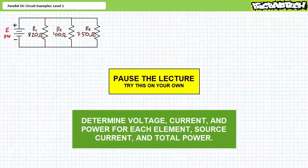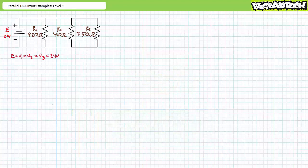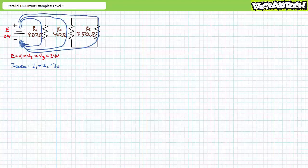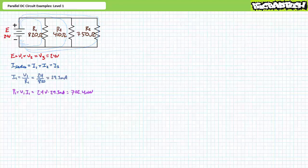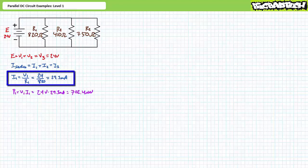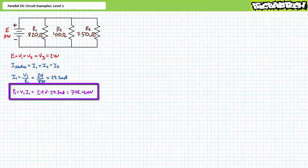If you're tracking, you should have obtained the following results. Voltage across elements in parallel is the same: E equals V1 equals V2 equals V3, all equal 24 volts. KCL gives source current equals I1 plus I2 plus I3. Using Ohm's law: I1 equals V1 over R1, yielding 29.3 milliamps; P1 equals V1 times I1, yielding 702.4 milliwatts. I2 equals V2 over R2, yielding 58.5 milliamps; P2 equals I2 squared times R2, yielding 1.4 watts.